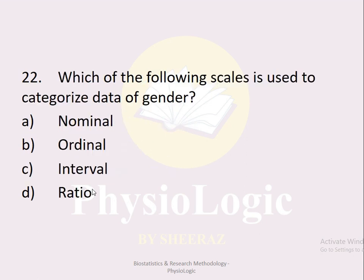MCQ number twenty-two: Which of the following scales is used to categorize the data of gender? Option a nominal, option b ordinal, option c interval, option d ratio. Gender can be categorized as male, female, or transgender. The correct option is option a, nominal scale.